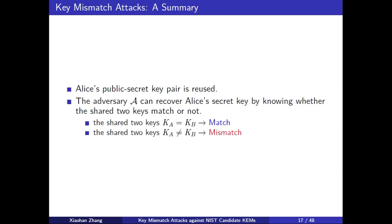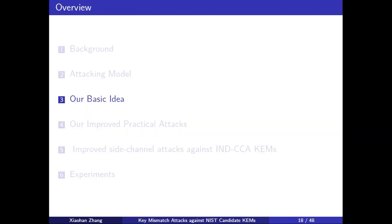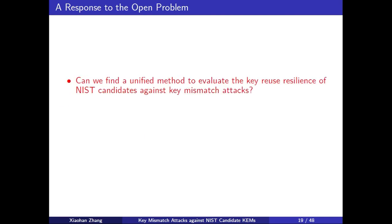In key-mismatch attacks, the precondition of attacking is Alice's secret key and public key are reused. An adversary wants to recover Alice's secret key by comparing whether the shared key is matched or not. If KA is equal to KB, which means matched. Otherwise, which means mismatched. In the following part, we introduce our basic idea. Now we can respond to the previous problem. That is, yes. In the remaining part, we describe our method in detail.